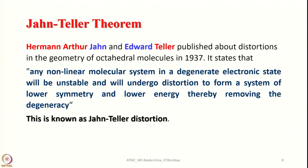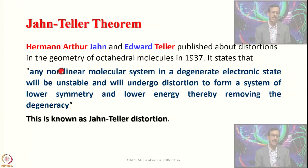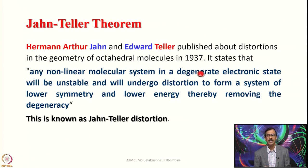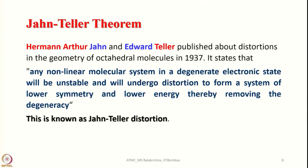Now let us move on to the Jahn-Teller theorem. Hermann Arthur Jahn and Edward Teller published about distortions in the geometry of octahedral molecules in 1937. The theorem states: any non-linear molecular system in a degenerate electronic state will be unstable and will undergo distortion to form a system of lower symmetry and lower energy, thereby removing the degeneracy.